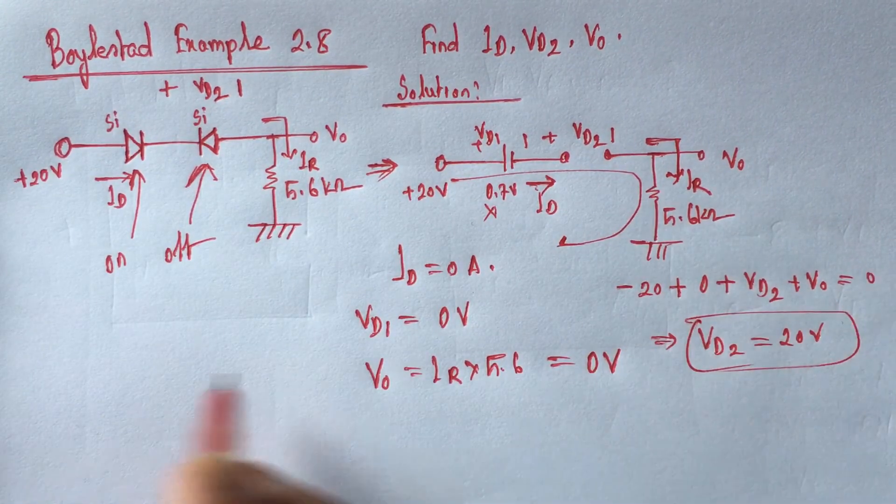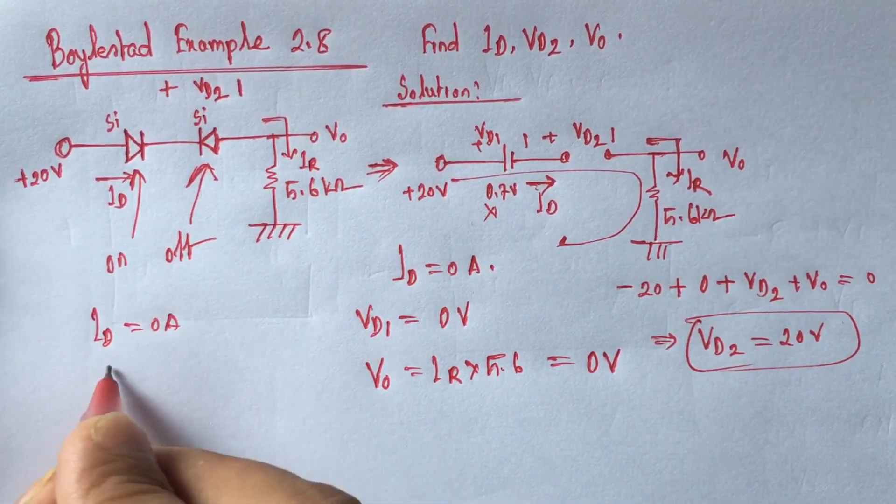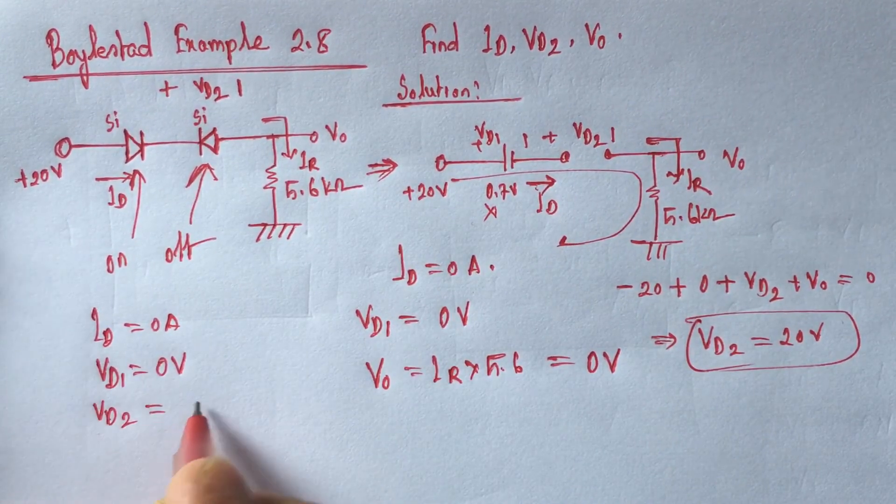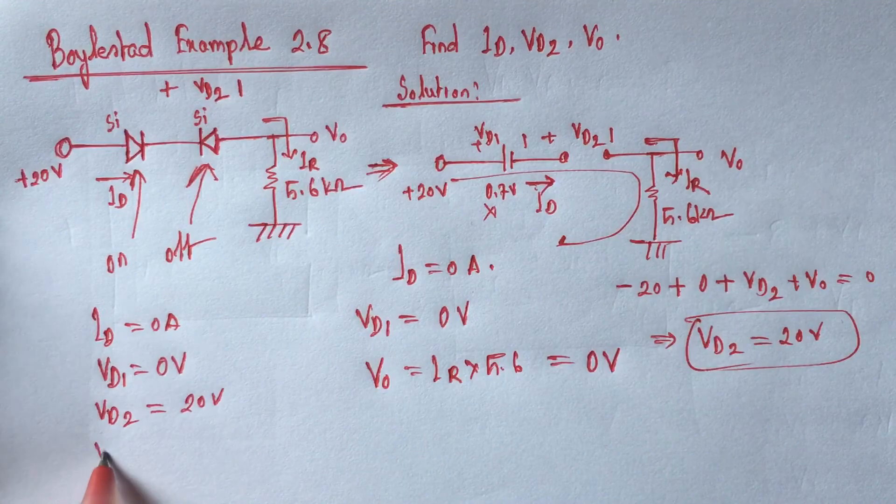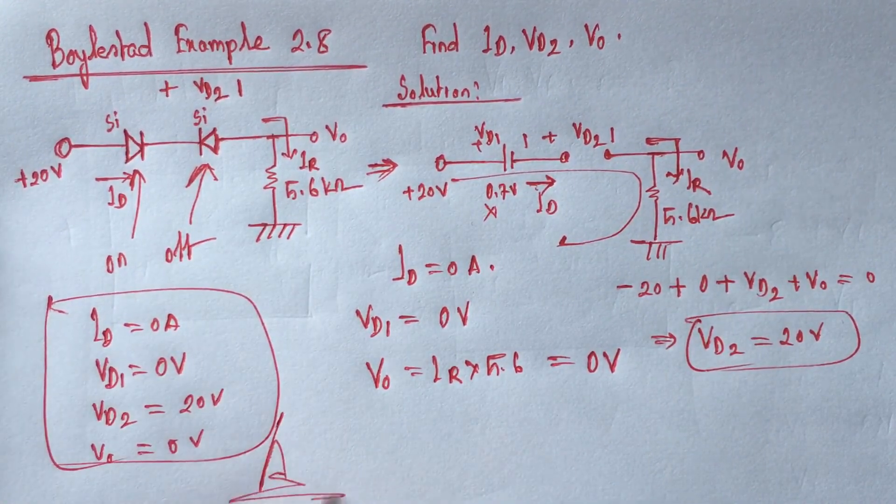VD2 is equal 20 volt. Finally we have got ID is equal 0 ampere, VD1 is equal 0 volt, VD2 is equal 20 volt and V output is equal 0 volt. These are all our answers. Thank you.